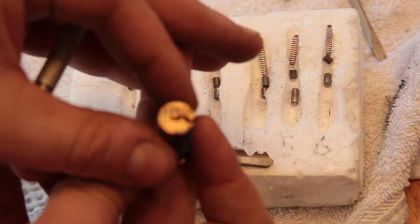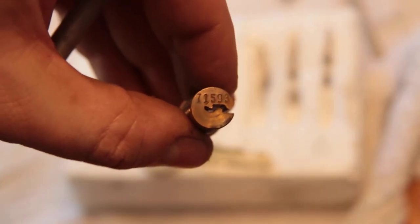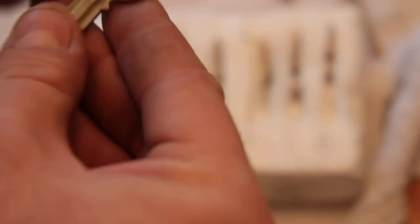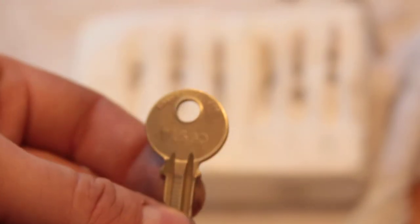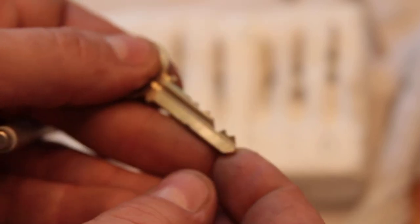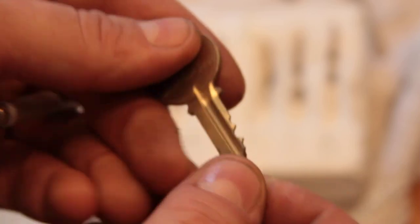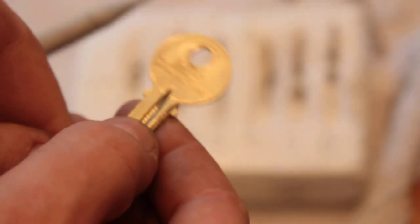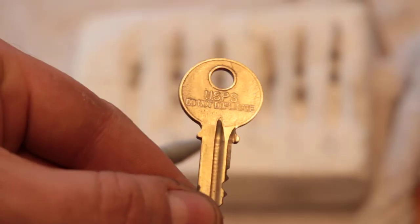The back of the plug is stamped with the code. And the key, since there's not much else interesting here, has a code on it as well. 71593. 71593. Doesn't appear to be a direct bidding code. So, that's just some other thing. And you can see, USPS do not duplicate on the bow. So, it's some type of postal, old postal lock.